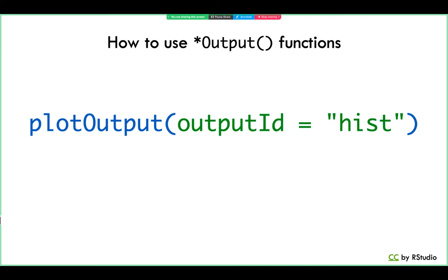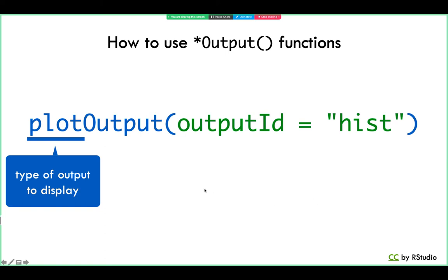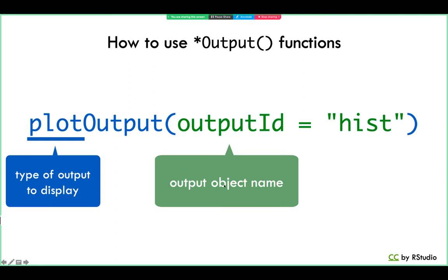The syntax of output functions is similar to input functions. Notice how the beginning of the function name tells you what kind of object you want to place in your app — to create a plot object, the output function is called plotOutput. Each output function takes the argument outputId where you specify the name of the output object, and that's the only required argument. Since outputId is the only required argument, people will often omit 'outputId equals' for conciseness. Note that the 'd' in outputId is lowercase.